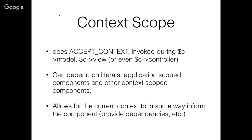Now let's talk about what I call context scope — a component that does implement acceptContext in its interface. When that component is requested in your action — by calling $c->model or $c->view — Catalyst, behind the scenes, looks at it and says 'this instance has a method called acceptContext, let's invoke it.' When it invokes it, it passes the context, so that method gets access to things like the request, the response, and you can look up other models. Like application scoping, you can depend on literals and other application-scoped components, but you can also depend on other context-scoped components. So it's a little more flexible.